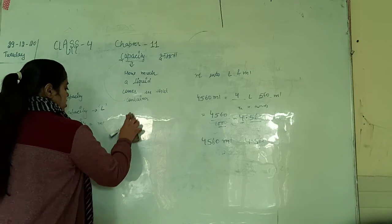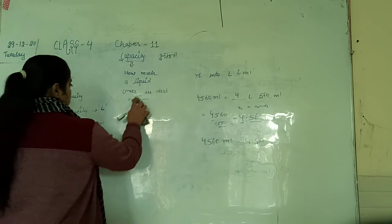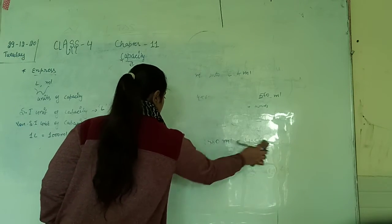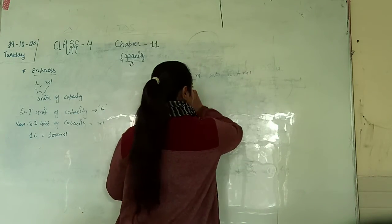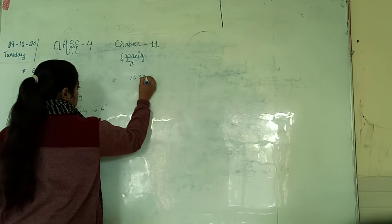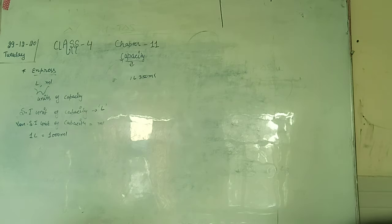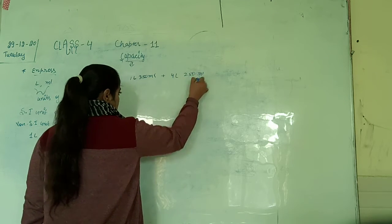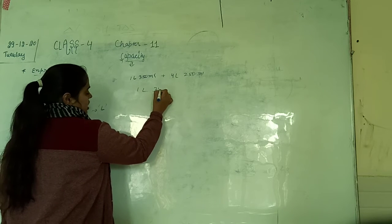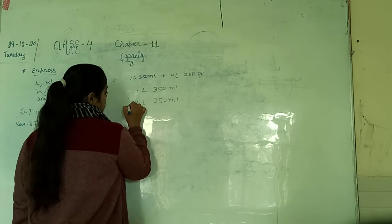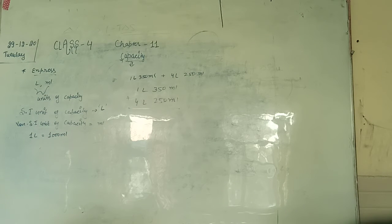After this, we will discuss how to add and subtract capacity. See this question: 1 litre 350 millilitre plus 4 litre 250 millilitre. Same as with other units — place litre under litre and millilitre under millilitre, then simply add. The same rule applies for subtraction, division, and multiplication as well.